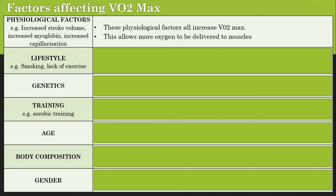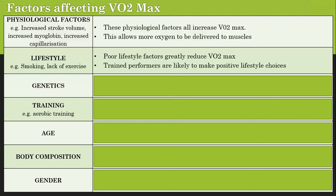Lifestyle is another factor. If you have poor lifestyle choices — if you smoke, have a poor diet, or lack exercise — then you're going to be reducing your VO2 max. Trained performers are likely to make more positive lifestyle choices and therefore have a higher VO2 max.